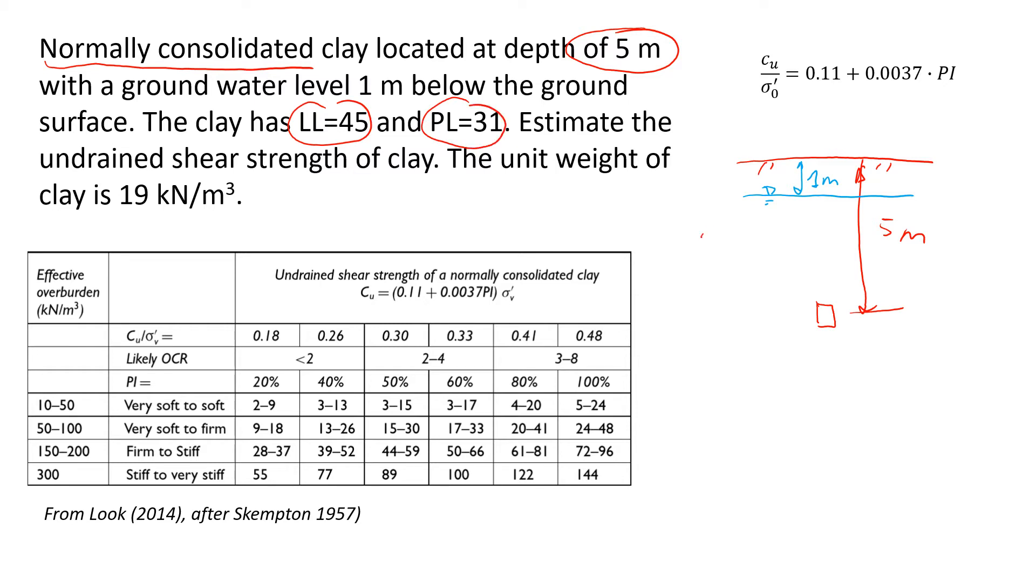We also know the unit weight which is 19 kilonewtons per cubic meter. So what we're asked to find is the undrained shear strength of clay and we're going to do it using this formula.